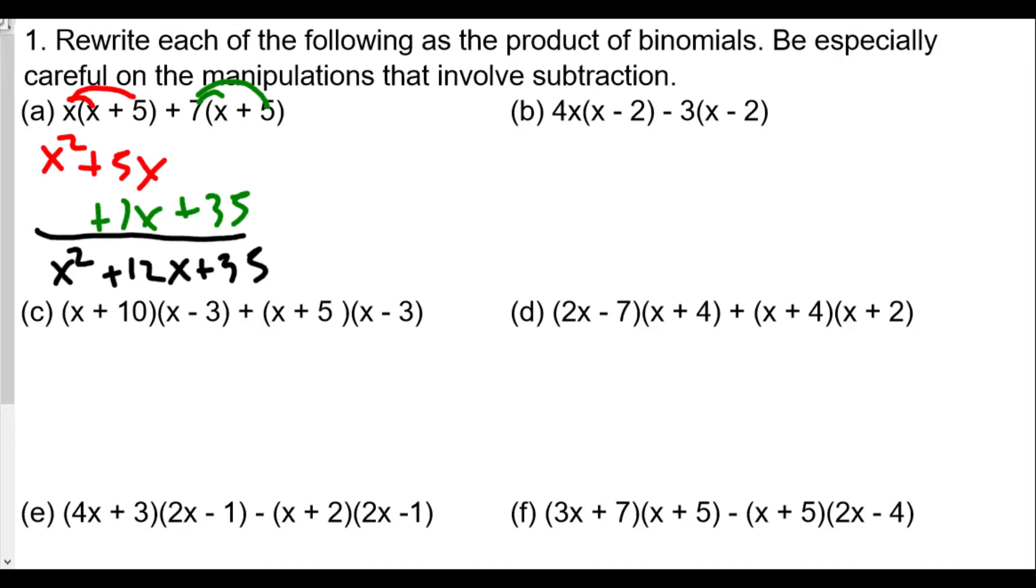For part b, we're multiplying 4x with x and negative 2, so we get 4x squared minus 8x. With that negative 3, we multiply negative 3 with each term. So we have negative 3x, but negative 3 times negative 2 is plus 6. When we add downwards, we get 4x squared minus 11x, because negative 8 plus negative 3 is negative 11, plus 6.